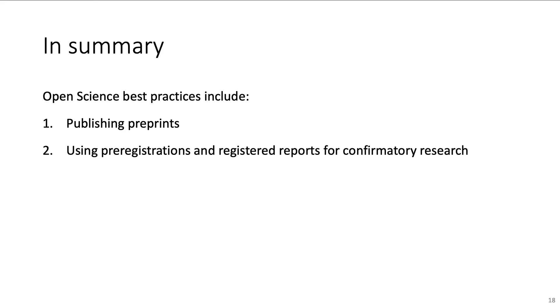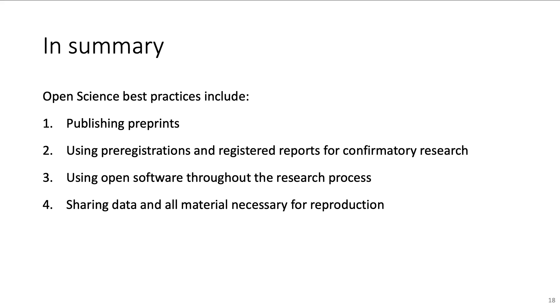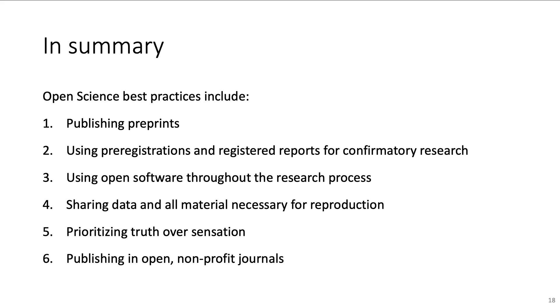In summary, open science best practices include publishing preprints, pre-registration and Registered Reports, using open software, sharing data and code, focusing on scientific rigor and not sensation, and publishing in open non-profit journals. So far so good. However, there are also some concerns and caveats. In the third and last video, we will deal with prominent criticisms of open science.